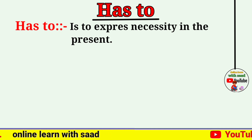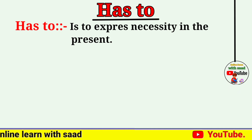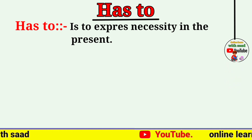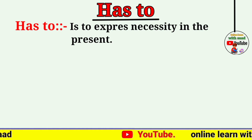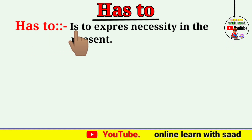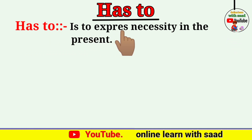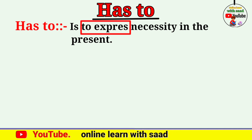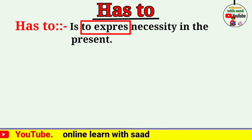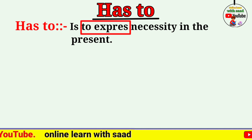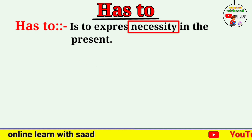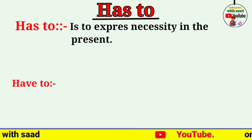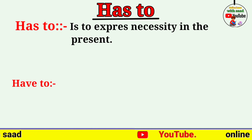Let's start کرتے ہیں ہماری آج کی class. Students، اس class میں ہم 'has to' کا استعمال سیکھیں گے۔ 'Has to' is used to express necessity in the present — یعنی کہ موجودہ وقت میں ضرورت کو ظاہر کرتا ہے۔